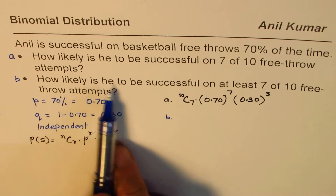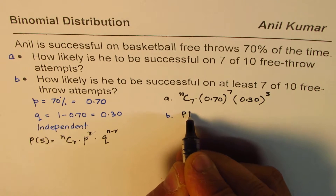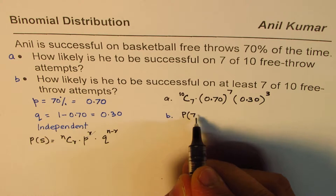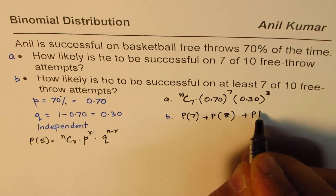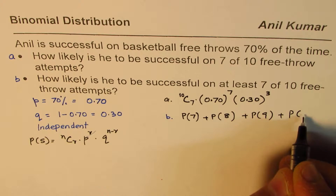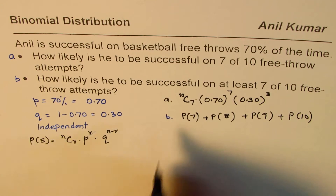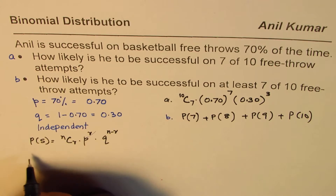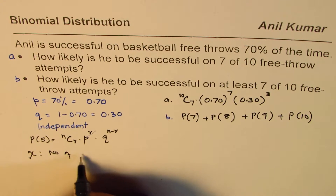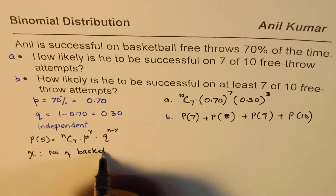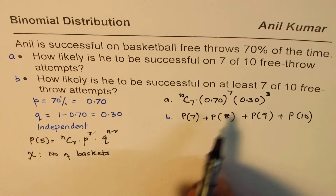Part B: how likely is he to be successful on at least 7? At least 7 means we are looking for success 7 times, so the random variable covers 7, 8, 9, and 10 baskets. We define the random variable success as getting the basket — number of successes equals 7, 8, 9, or 10.